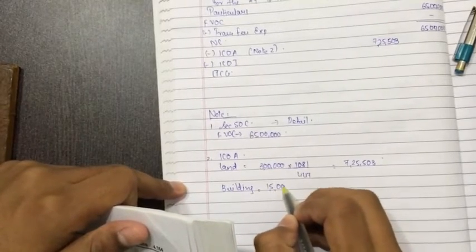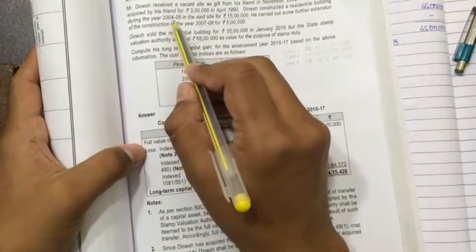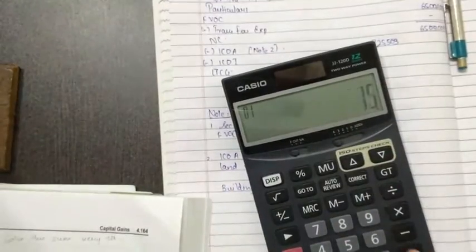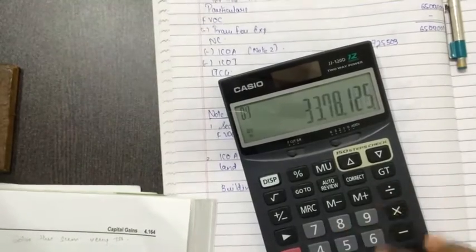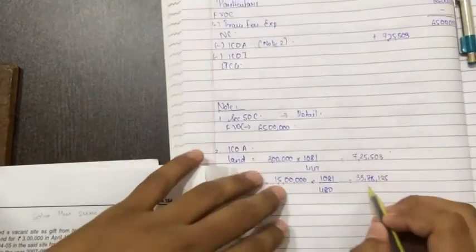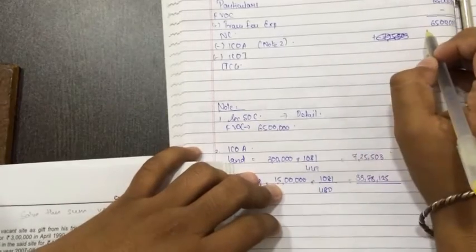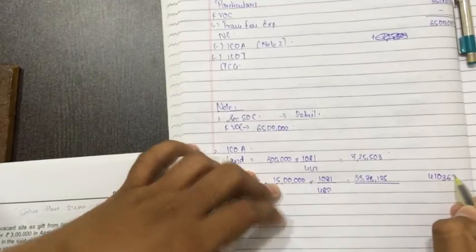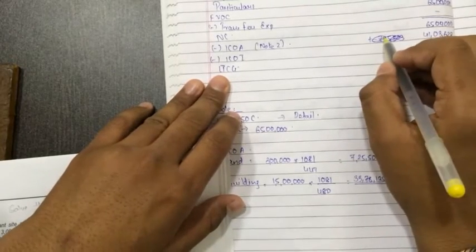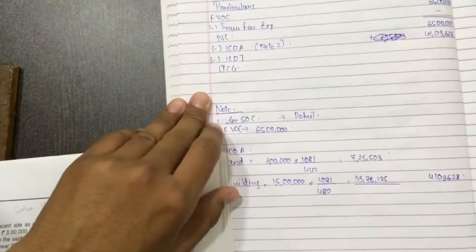Okay, now for building. Building was constructed for 15 lakhs into 1081 divided by cost of when the building was constructed. Building was constructed in 2004-2005. So 2004-2005 inflation rate is 480. So divide by 480. You will get 15 lakhs into 1081 divided by 480 comes to 33 lakhs 78,125. I have already substituted the value. You have to just total it and substitute it above. I am sorry for that. 1 plus 725,503 is equal to 41,03,628. So I am just putting in the outer column directly. I am sorry, I am ruining the presentation. Your place, put it in the inner column. And after that, total index cost of acquisition and index cost of improvement, tick it in the outside column. I am sorry for that.